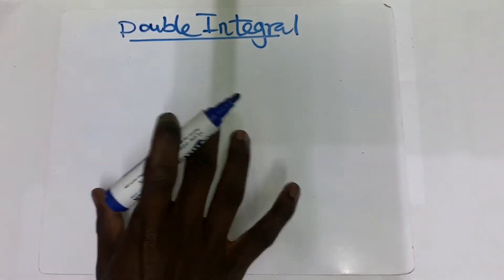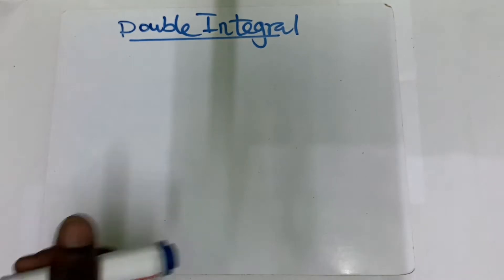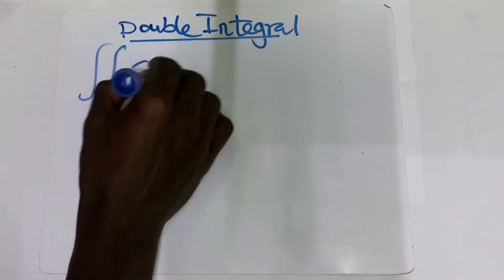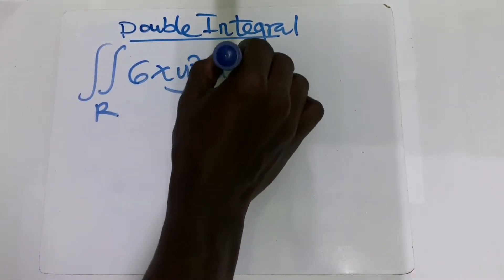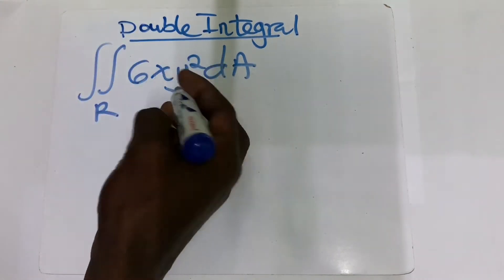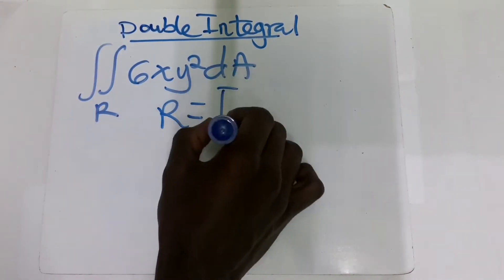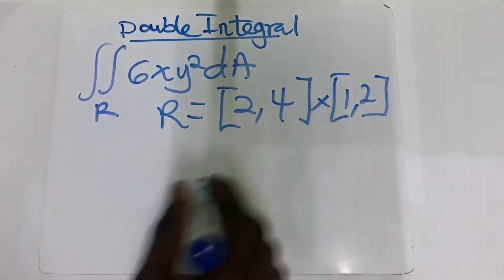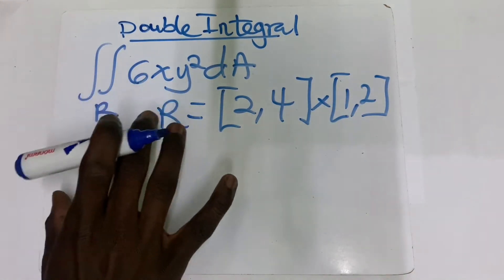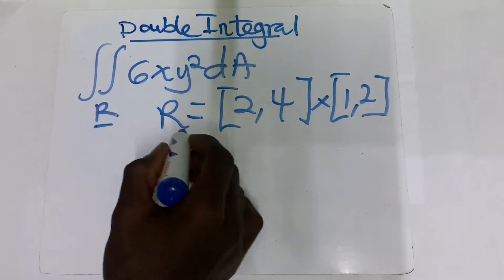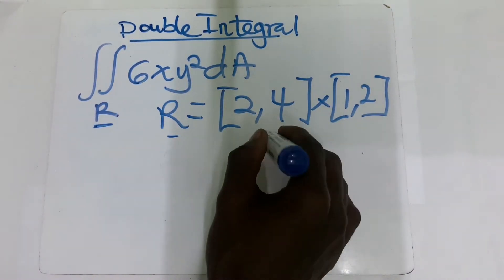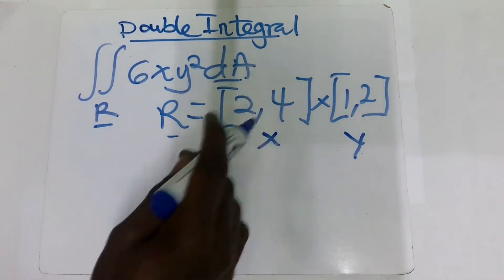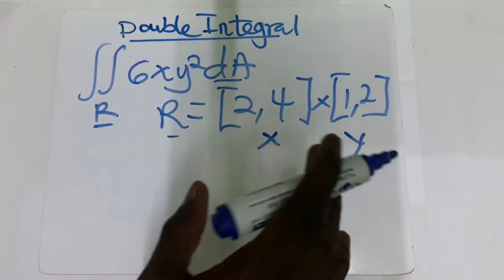But with this video, we are going to do the normal double integral. So let me explain this using a question. We have the double integral of R, which is equal to 6xy² dA, and they give you a condition: R = [2,4] × [1,2]. So the dA can be expressed in any way of your choice, depending on the choice that you choose.